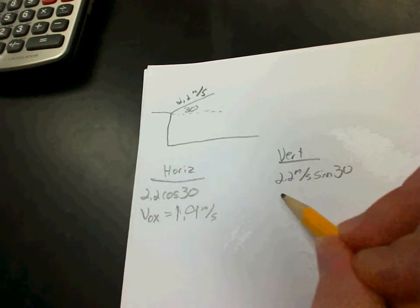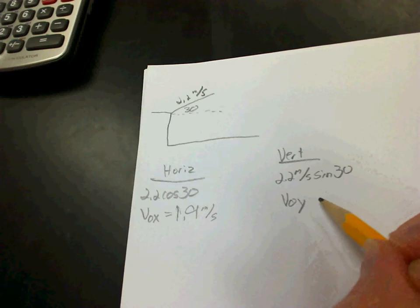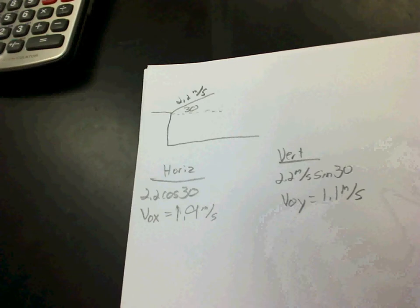And putting it into your y, your initial y velocity is 1.1 meter per second. So that solves for part A.